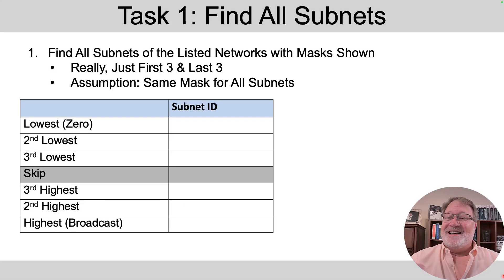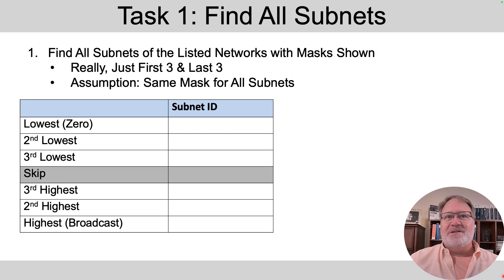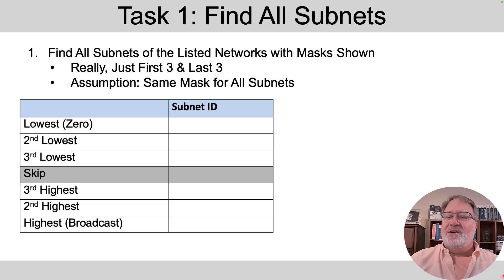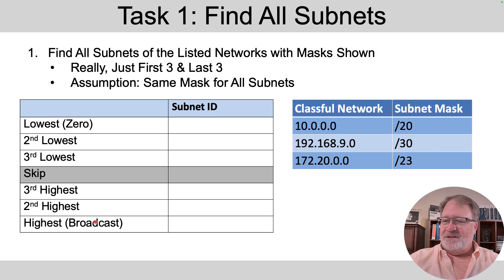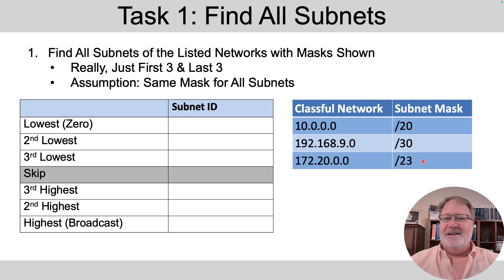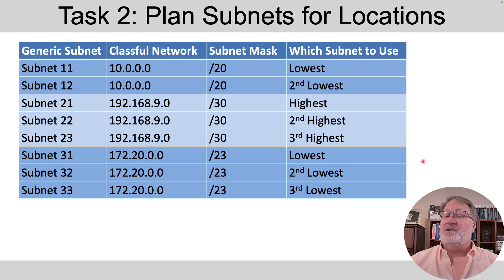Task number one is to find all subnets of three different networks. I'm using three different networks to give you more practice — if this were just about configuration practice, I'd probably use one. For each of these three networks, find the numerically lowest three subnet IDs and the numerically highest three subnet IDs. The three networks and masks are: network 10 with a /20 mask, a class-C network with a /30, and a class-B network with a /23. Once you have that list built as reference, we'll talk about where to use those subnets.